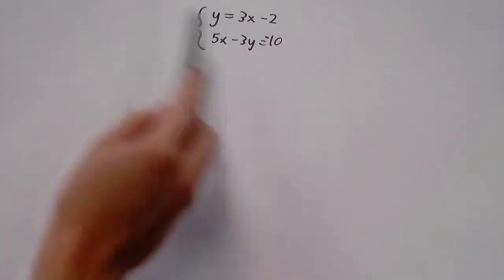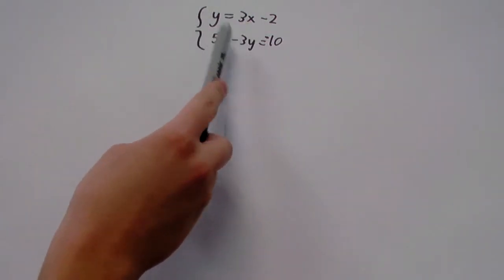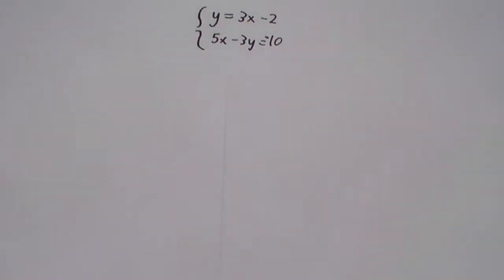So in this case, we're told that y is 3x minus 2, and 5x minus 3y is negative 10. So we have to figure out what two values for x and y will make both of these equations work.